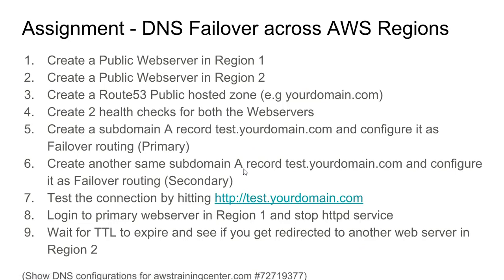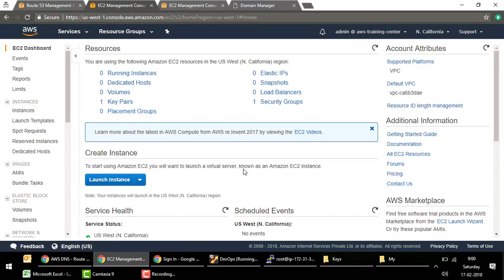In this assignment we are going to create two public web servers in two regions, then create a Route 53 hosted zone. We'll configure one region as the primary web server and the other as secondary, then make the first web server fail to see if DNS resolves to the second web server.